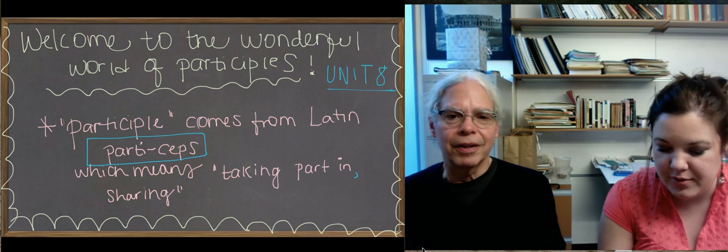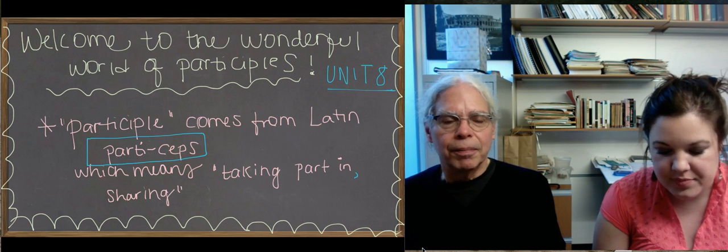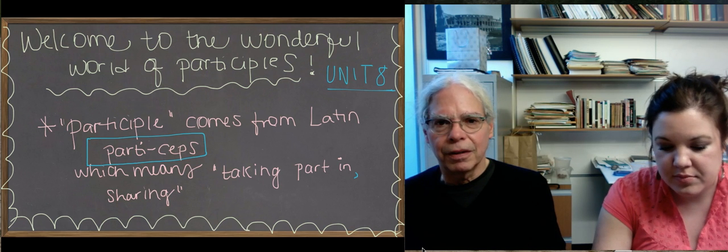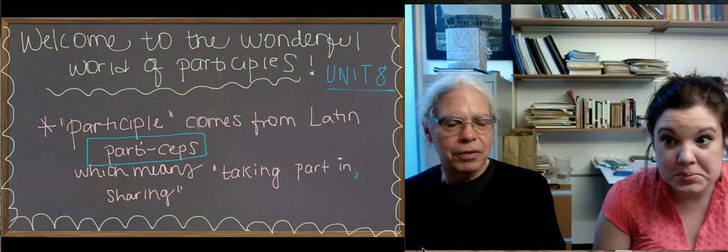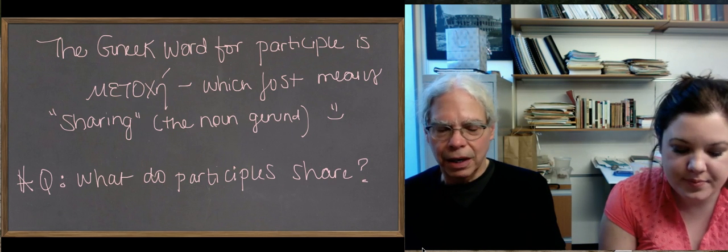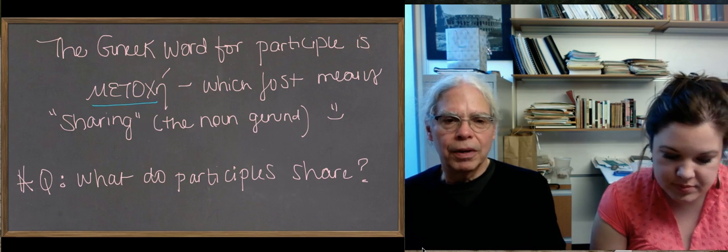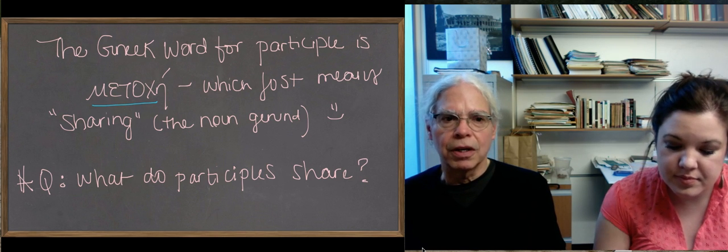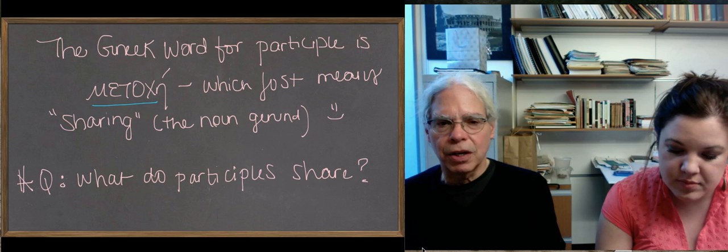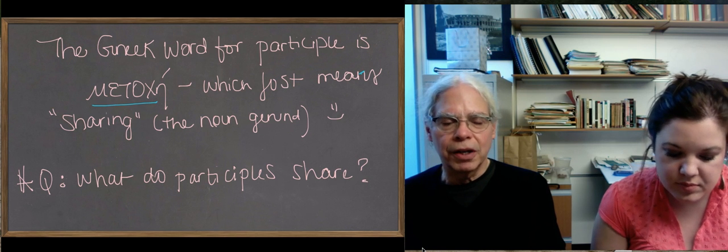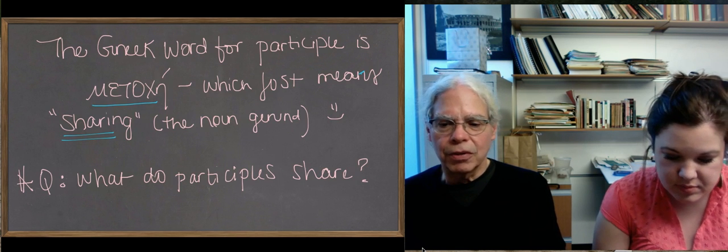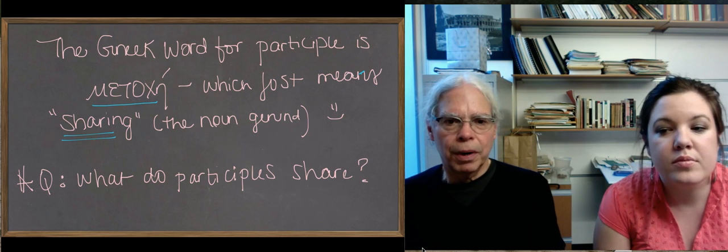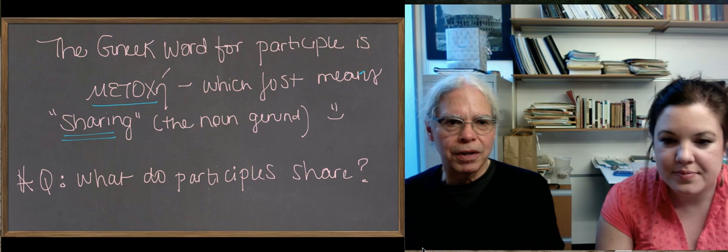If we go to the next screen, we learn that the Greek word for participle is just a noun, metoche. It's the action noun from a verb that means to share, and it means sharing, the process of sharing. The noun, the gerund, sharing. So the question is, what does it have to do with participles, and what do participles share, and why do they have this name?